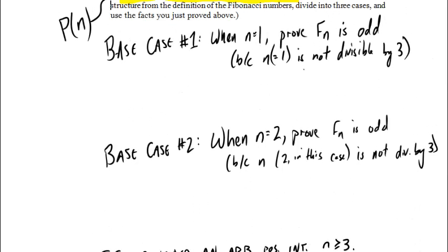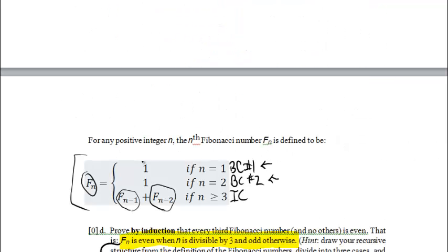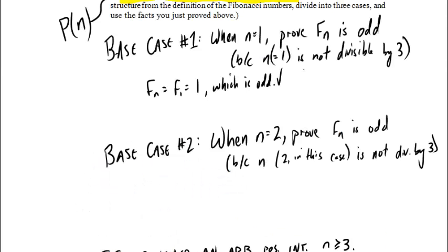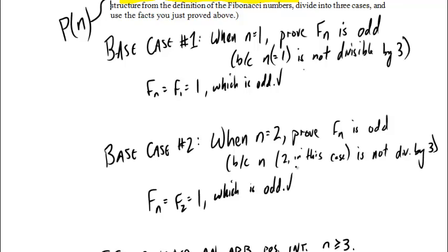Let's finish the base cases. When n equals 1, prove F of n is odd: F of 1 equals 1, which is odd — just as required, from the definition. Base case 2: when n equals 2, F of 2 equals 1, which is odd. That takes care of our proof.